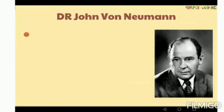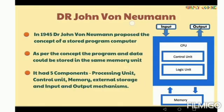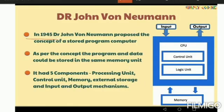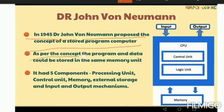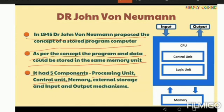In 1945, Dr. John Von Neumann proposed the concept of a stored program computer. As per this concept, programs and data could be stored in the same memory unit. It had 5 components: a processing unit, control unit, memory unit, external storage, and input and output mechanism.